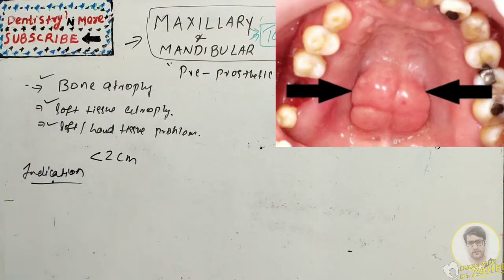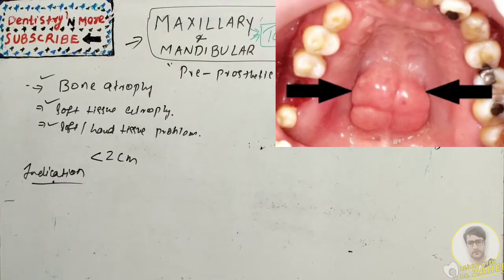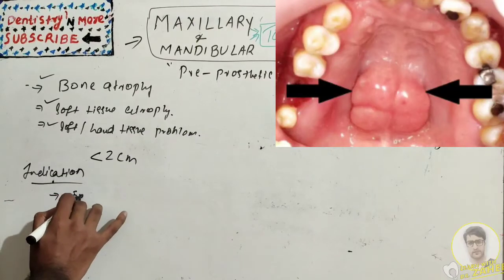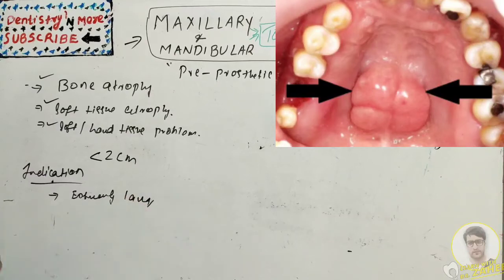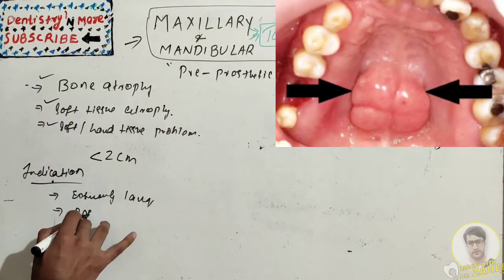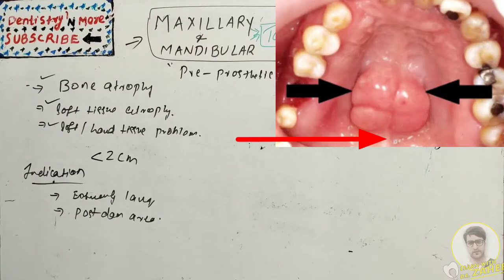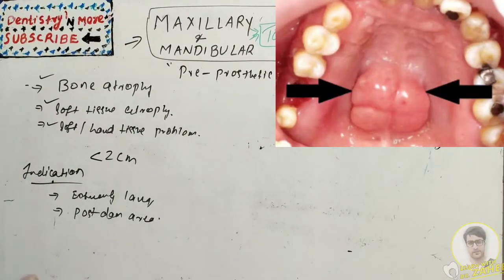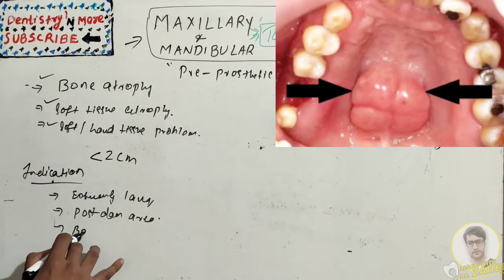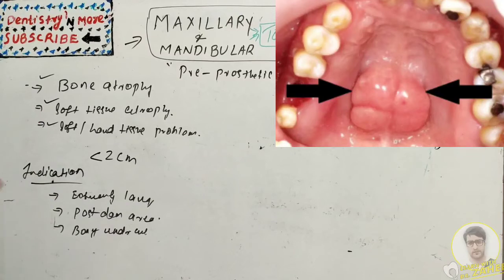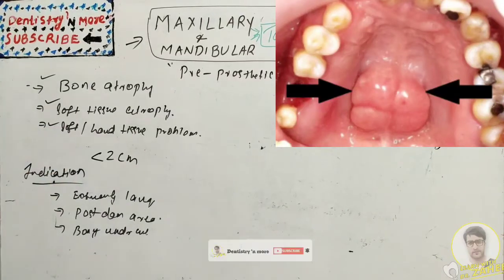Not all the time should we remove maxillary tori to receive a complete denture. The indications are: an extremely large torus that actually fills the palatal vault, or a torus that extends beyond the post-dam area — the posterior part where the actual retention occurs. Also if there is traumatized mucosa over the torus, or if there are deep bony undercuts which interfere with the denture insertion and stability.